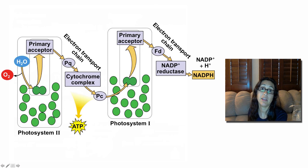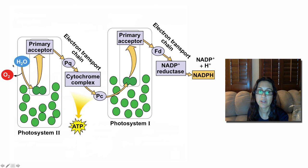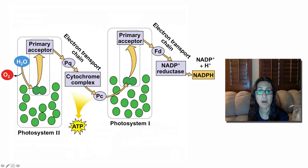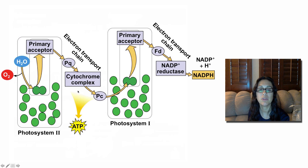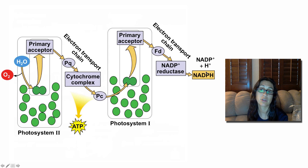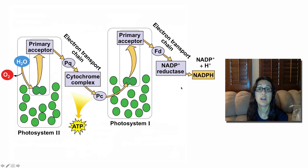Some key things to notice: the importance of water — water is used as an electron donor to fill the electron hole in P680 in photosystem II, and as a result, the hydrogen and oxygen become separated and oxygen is released. The first electron transport chain pumps hydrogen ions into the thylakoid space, creating a proton gradient that drives chemiosmosis and the production of ATP. The second electron transport chain passes electrons to NADP+ to create NADPH. That is everything — the basics for the light-dependent reactions.